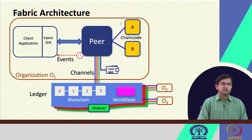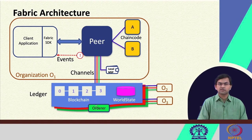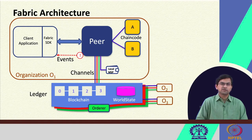This is the representation of one organization. Similarly, there would be other organizations participating in the network. The transactions being executed by these organizations are ordered in a particular service called the orderer. The orderer takes transactions from different peers, orders them, and compiles them into a block which is then committed through the consensus process. There are different implementations of the Fabric orderer — the most popular or default one is the Raft implementation.